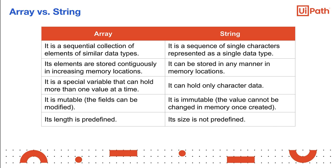Let's compare array and string. Array is a fixed-size sequence collection of elements of the same base types that share a single name and can be used to represent a list of names or numbers. The elements of arrays are stored continuously in increasing memory locations. It is a special variable that can hold more than one value at a time. Array is mutable, but the length of the array is predefined. A string is similar to an array with a few exceptions. String is a sequence of single characters represented as a single data type. It can be stored in any manner in memory locations. It can hold any character data. String is not mutable. And the size is not predefined.